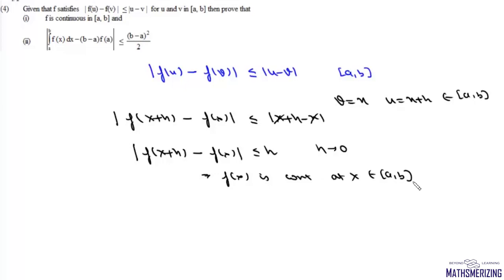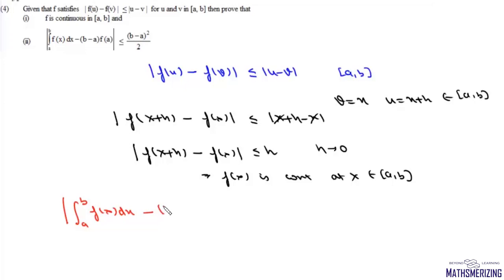The second part of this question requires us to prove that |∫f(x)dx - (b - a)f(a)| ≤ (b - a)²/2. We start with |∫[a to b] f(x)dx - (b - a)f(a)|.